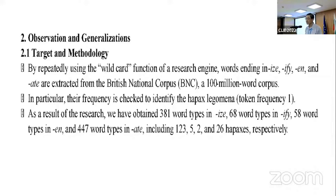By repeatedly using the wildcard function of a search engine, words ending in -ize, -ify, -en, and -ate are extracted from the British National Corpus, a 100 million word corpus. In particular, their frequency is checked to identify the hapax legomena, token frequency 1. As a result of the research, we have obtained 381 word types in -ize, 68 word types in -ify, 558 word types in -en, and 447 word types in -ate, including 123, 5, 2, and 26 hapaxes respectively.